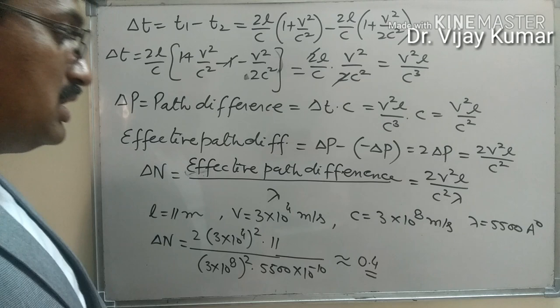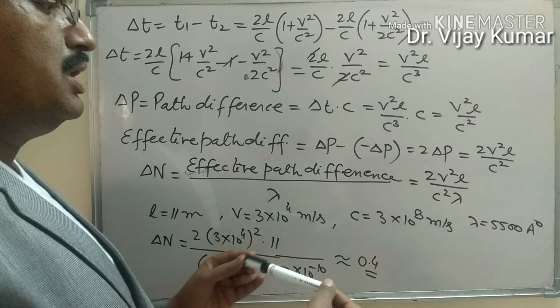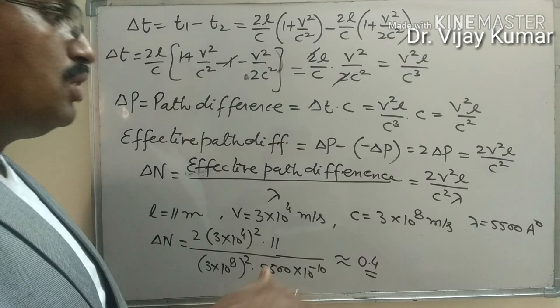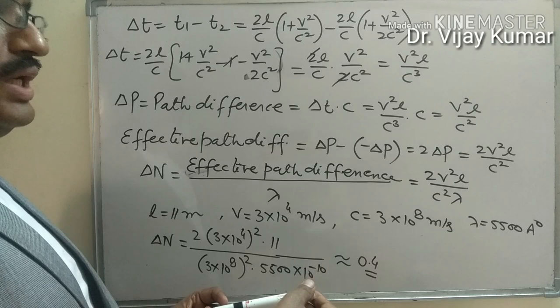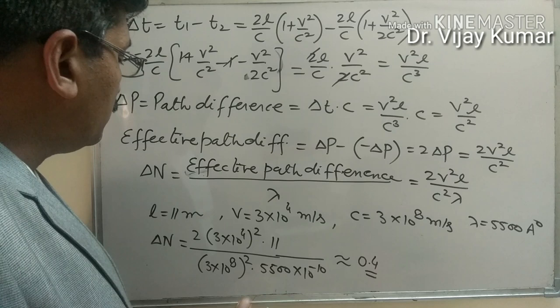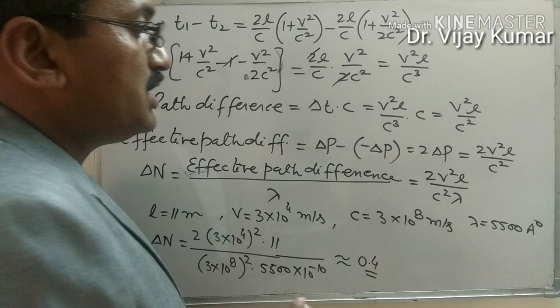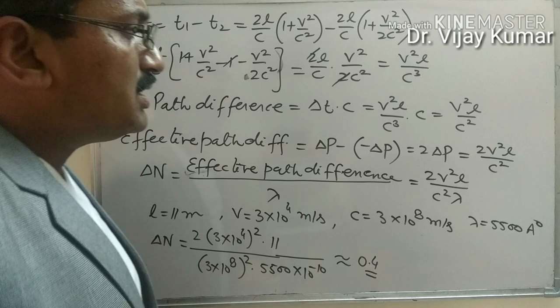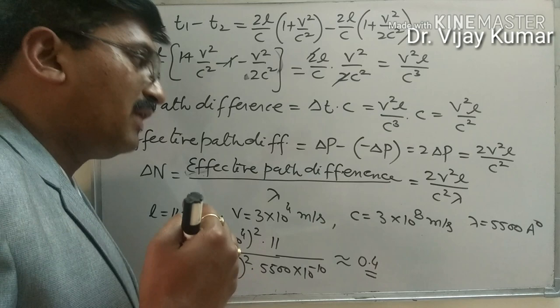This means not a single fringe was shifted when the experiment was rotated by 180 degrees. If the surrounding Ether medium were stationary, rotating the experiment by 180 degrees should produce a large number of fringe shifts, but no fringe shift was observed at all. Michelson and Morley performed this experiment at different places and at different times, but the result never changed. That is why this experiment was declared a failure for the Ether hypothesis.